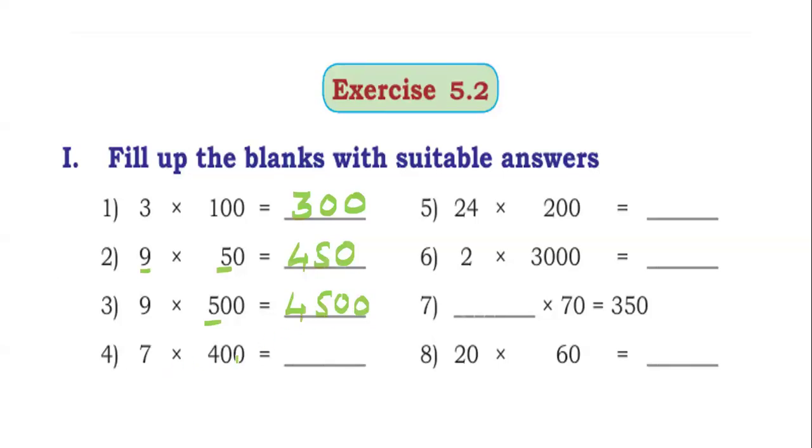7 into 400. 7 into 4 means 28. There are two zeros in the right hand side. 2,800 is the answer.